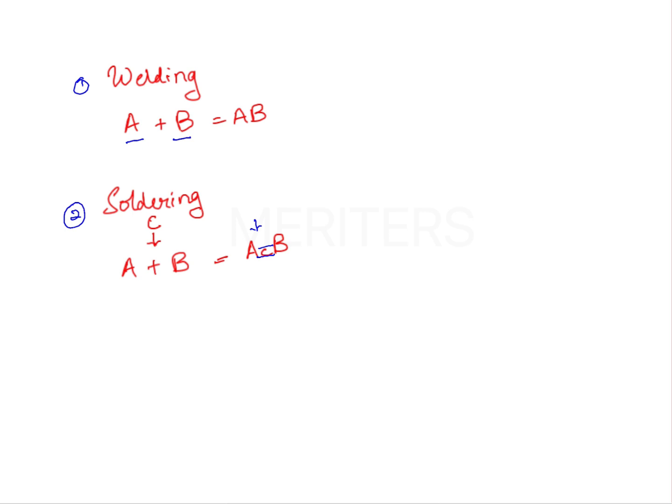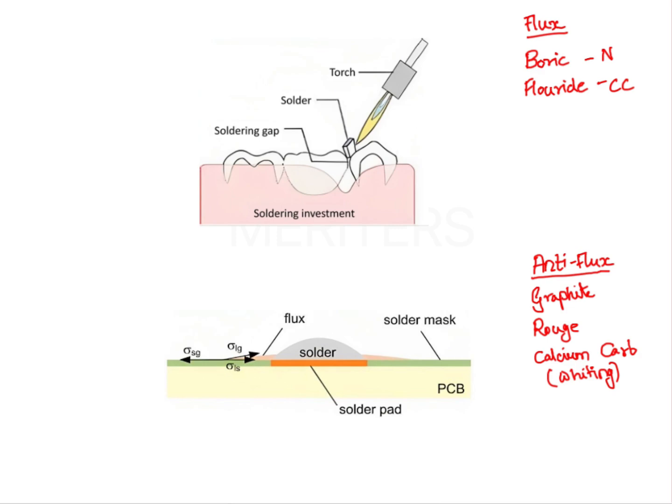This is a third unit which is helping you connect the two metals. Now let us see soldering more in detail. For soldering, you need a flux, an anti-flux, and a solder material. Imagine this is your parent metal. This unit has to be connected to this unit.